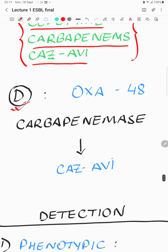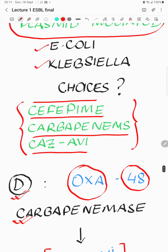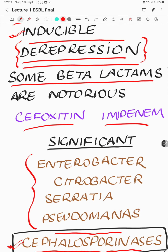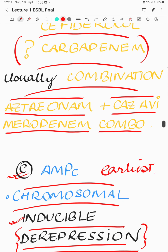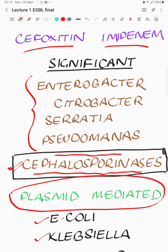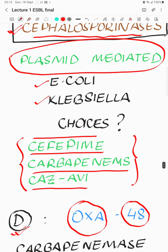Now we come to group D — another serine protease — oxacillinase. The most talked about or most prevalent is OXA-type, which is also a carbapenemase. The drug of choice for this is ceftazidime-avibactam. So we see that in all four groups, except probably AmpC, there is a carbapenemase, and so you have different substrate specificity within the same class.